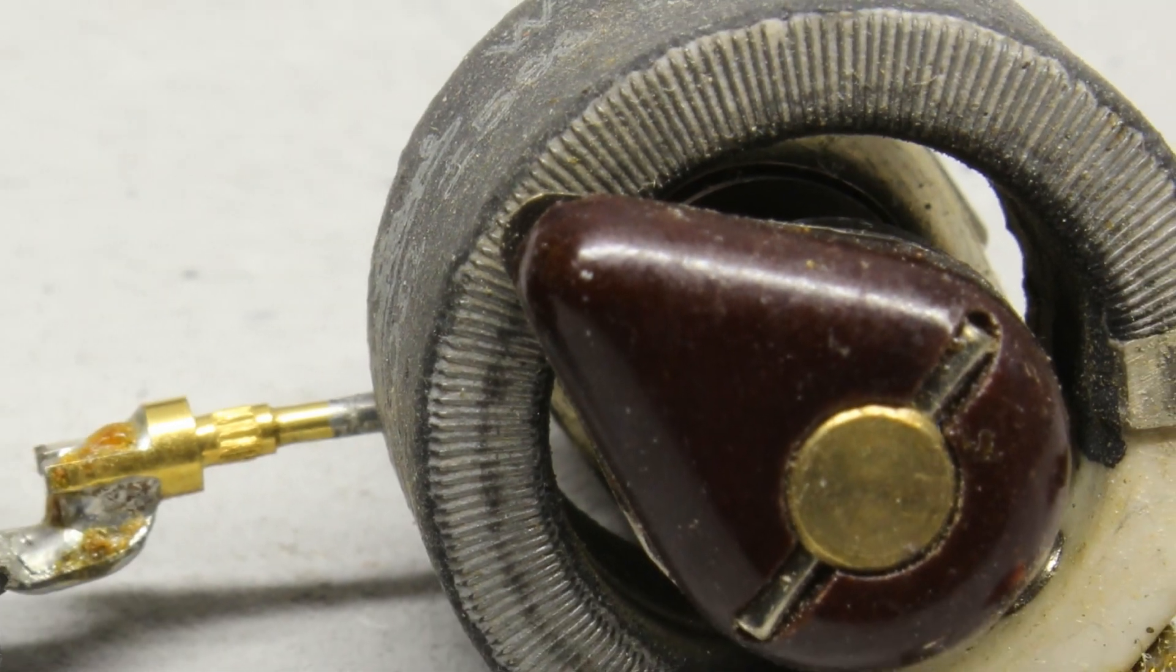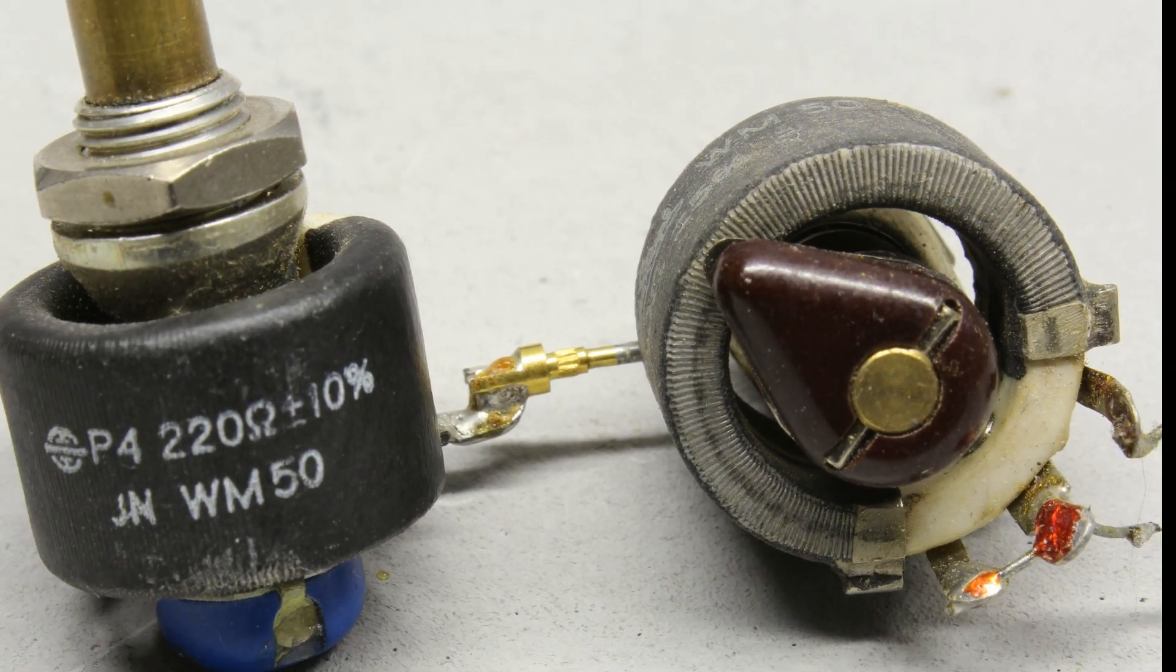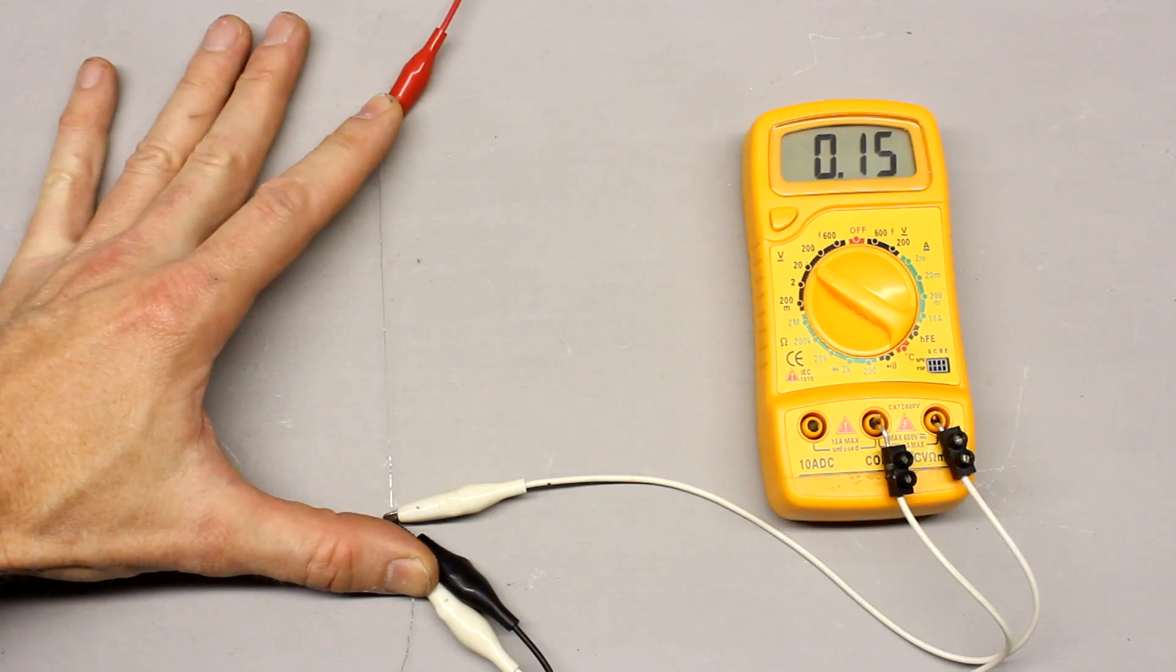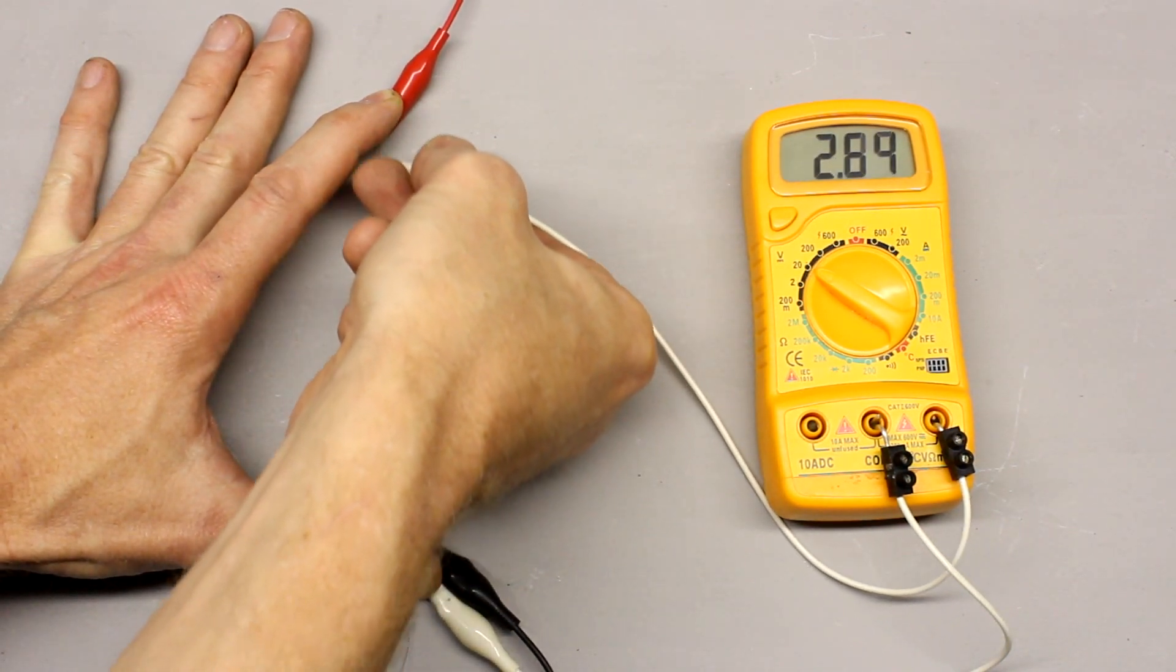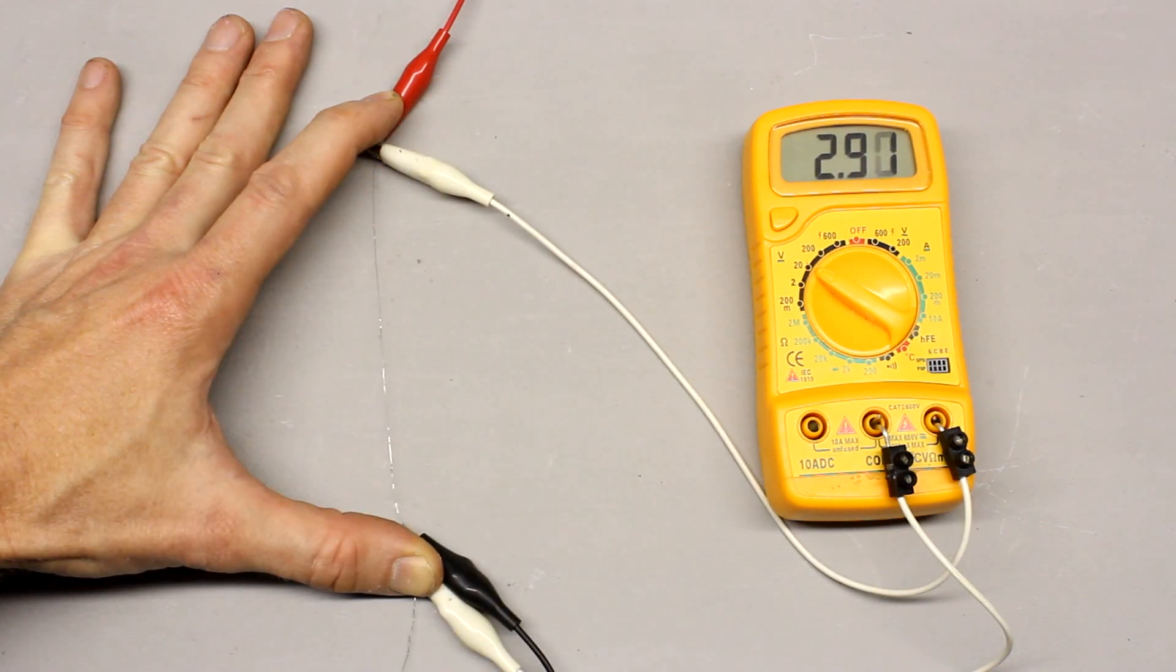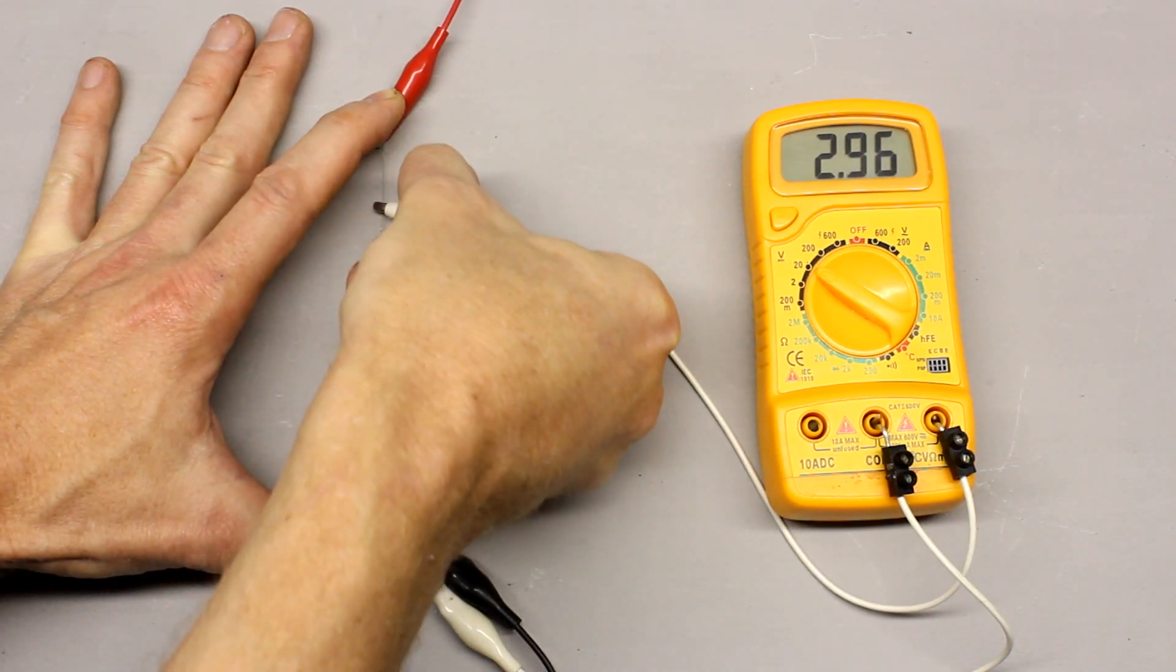High power potentiometers are often made of wound resistance wire. A piece of resistance wire with a clamp used as sliding contact can be used as a very simple construction of a linear potentiometer.